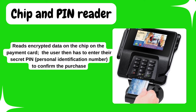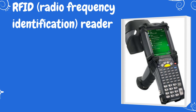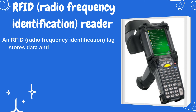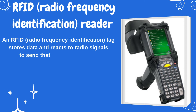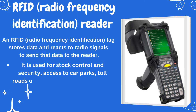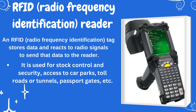Three: RFID (radio frequency identification) reader. An RFID tag stores data and reacts to radio signals to send that data to the reader. It is used for stock control and security, access to car parks, toll roads or tunnels, passport gates, etc.